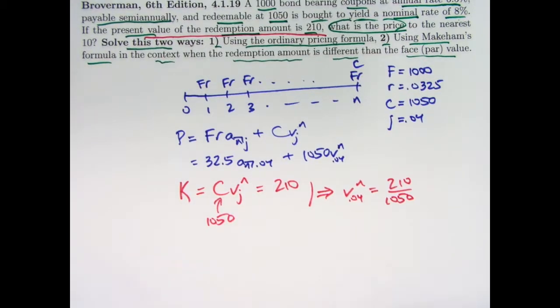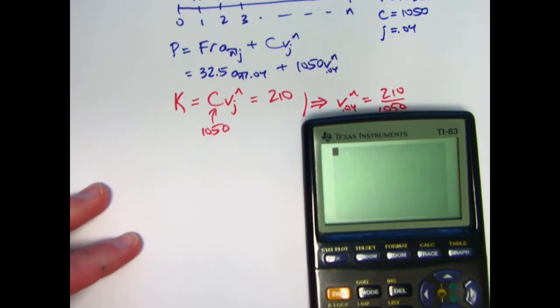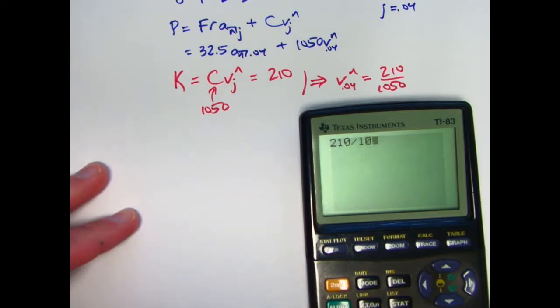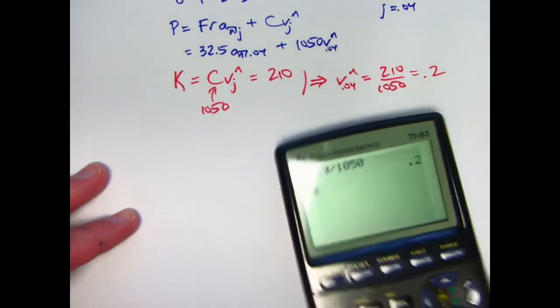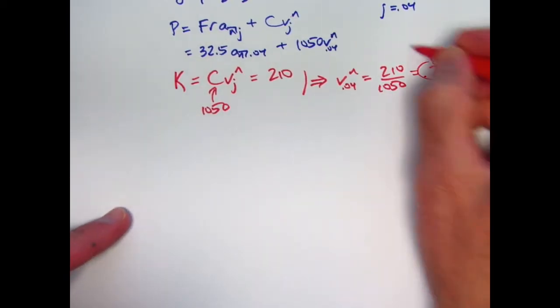And that will help us solve our problem. I'm realizing I'm missing my ordinary calculator, but that's okay. We'll use a fancier calculator. 210 divided by 1,050 is 0.2.